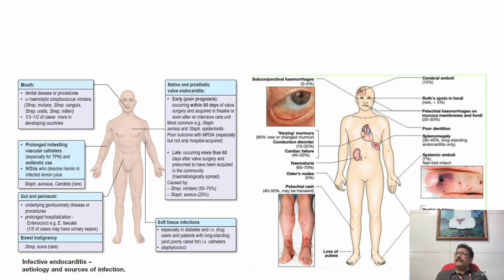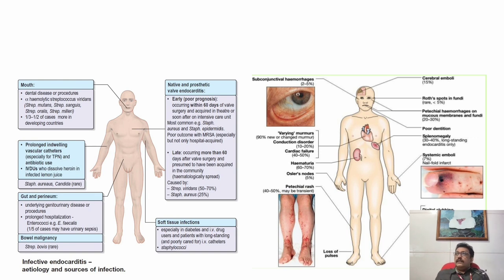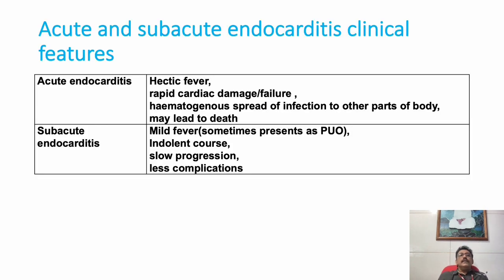In Western countries, IE is diagnosed early with echocardiography, but in our country, due to lack of facilities in many centers, many patients present with pyrexia of unknown origin. It is our duty to find out whether a patient has infective endocarditis, as it is one of the most important differential diagnoses of PUO, especially when there is a cardiac murmur.